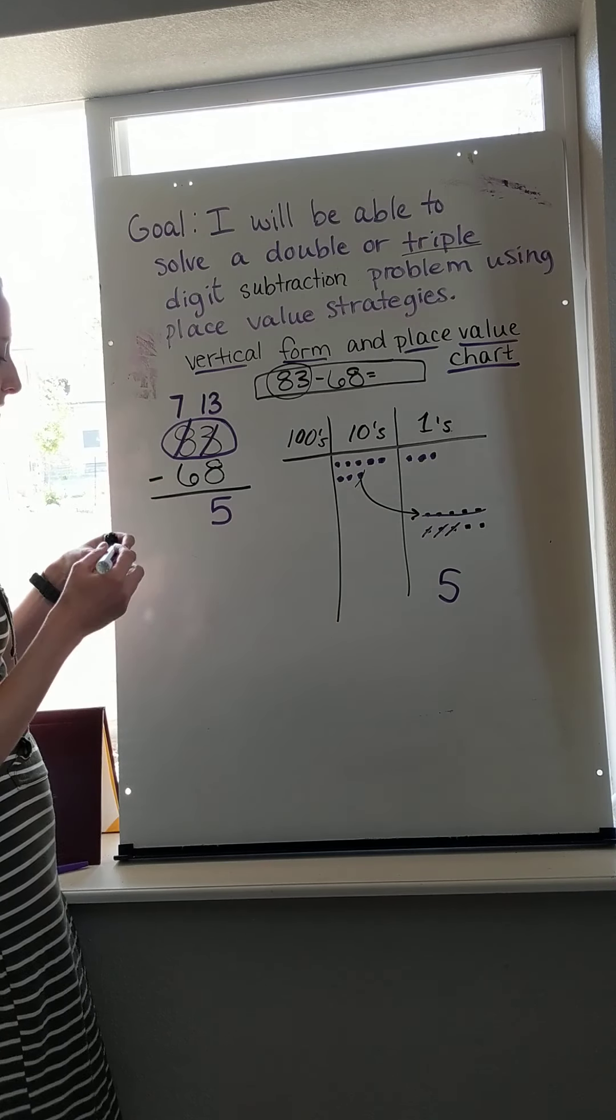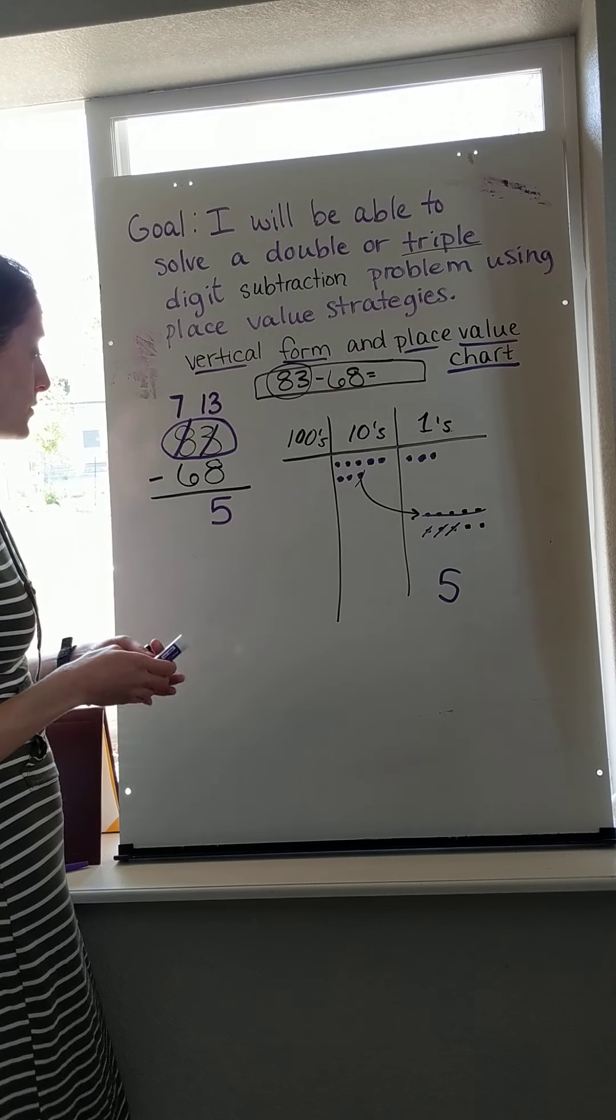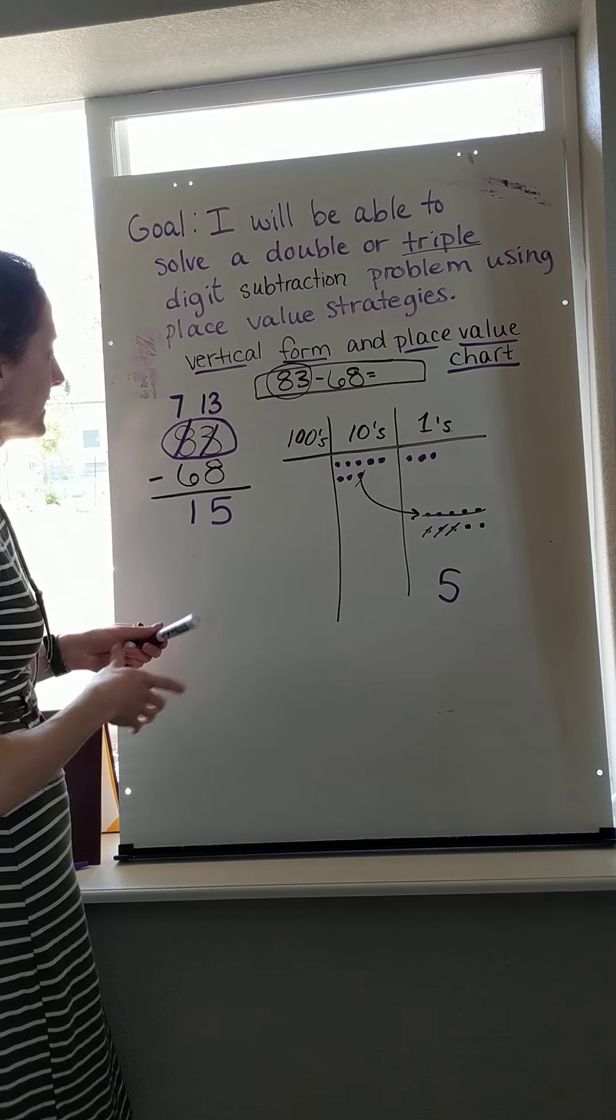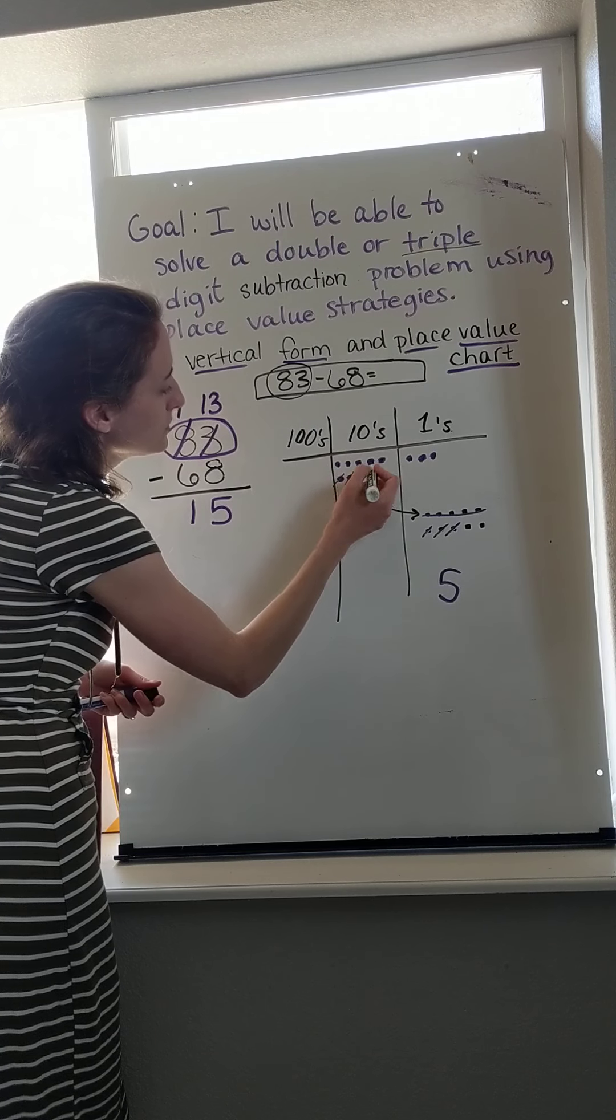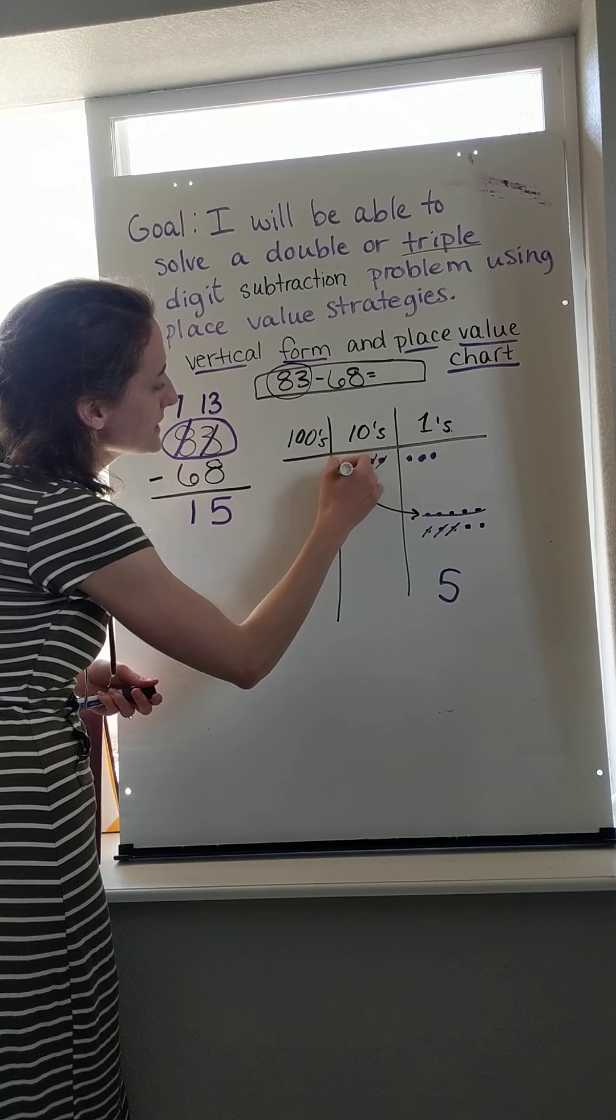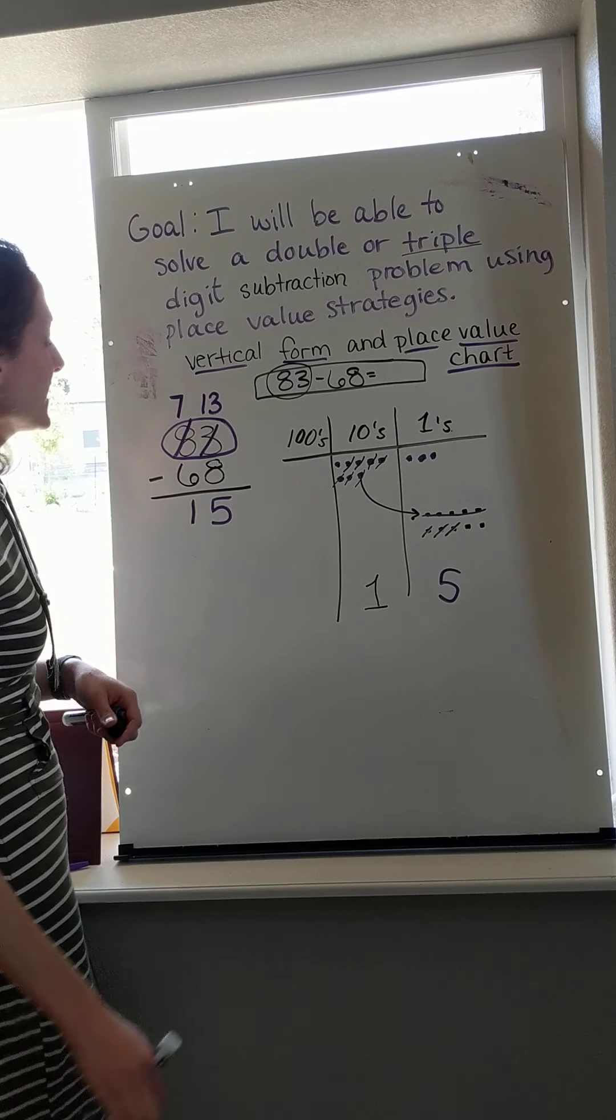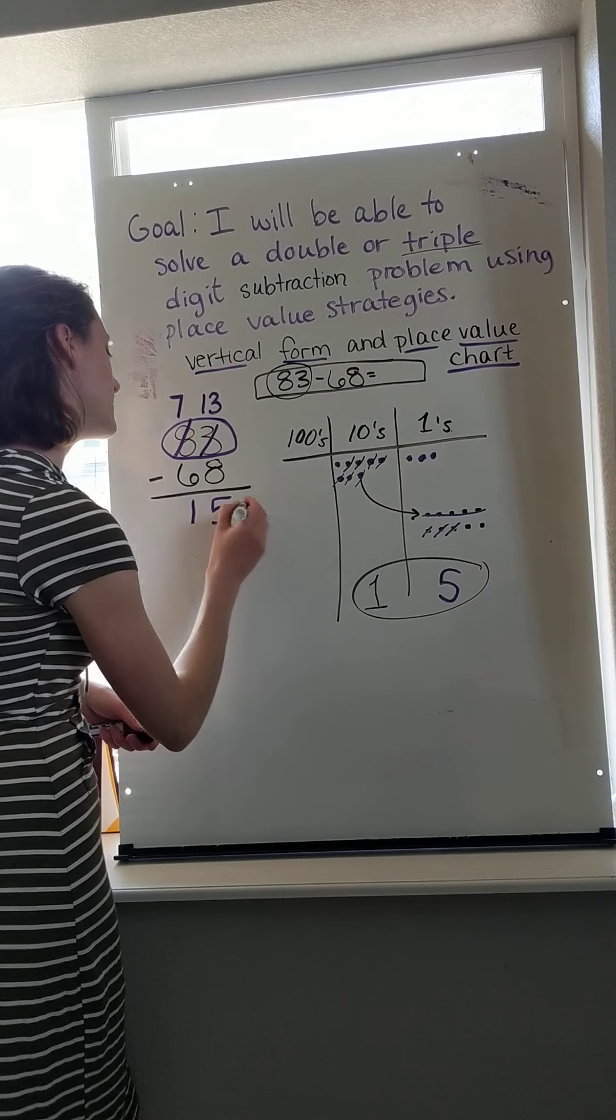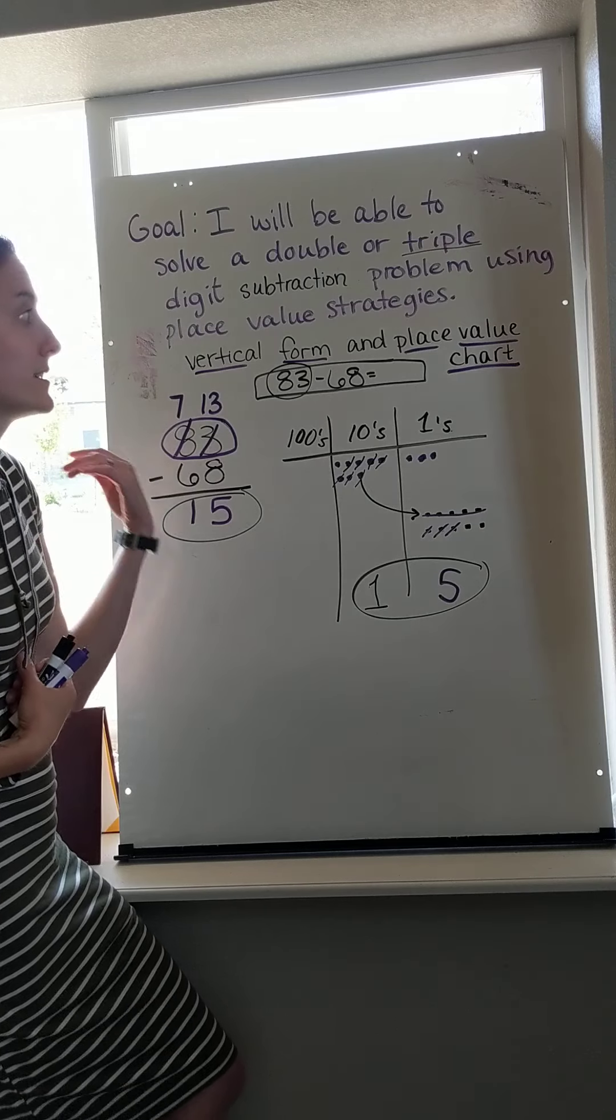So now I come over here and I say seven tens minus six tens. Well, I know the difference between seven and six is just one, so one ten. Let's check that out and make sure I'm correct. Seven, and I cross out six: 1, 2, 3, 4, 5, 6. Sure enough, I'm just left with one ten. So now I see that my answer in my place value chart and my answer in my vertical form match. That's a good sign, and that's why it's good to do more than one strategy, because then I can be sure.